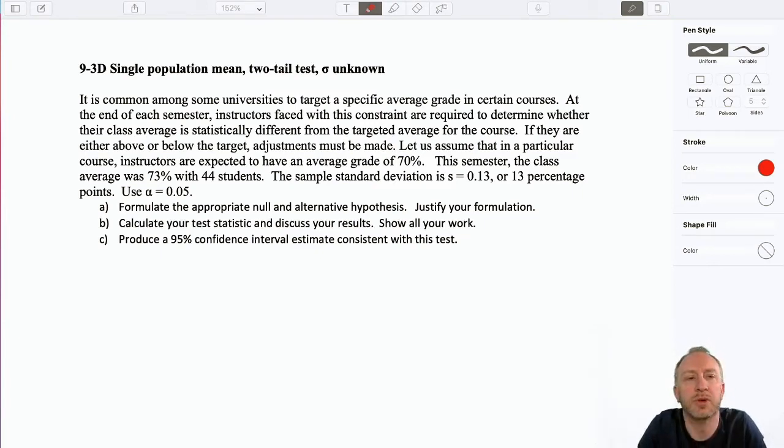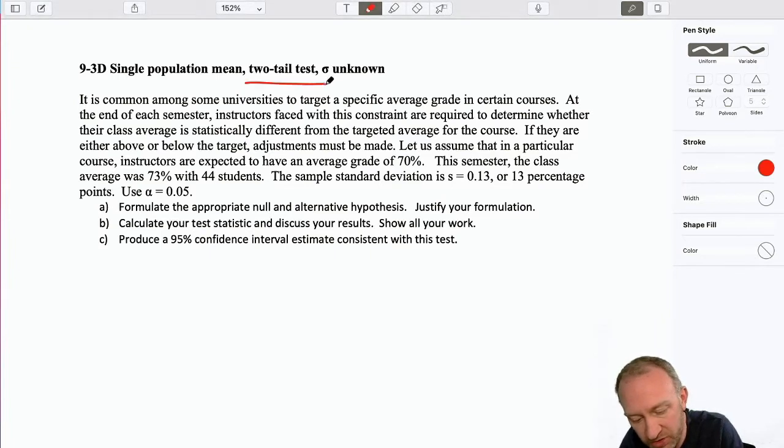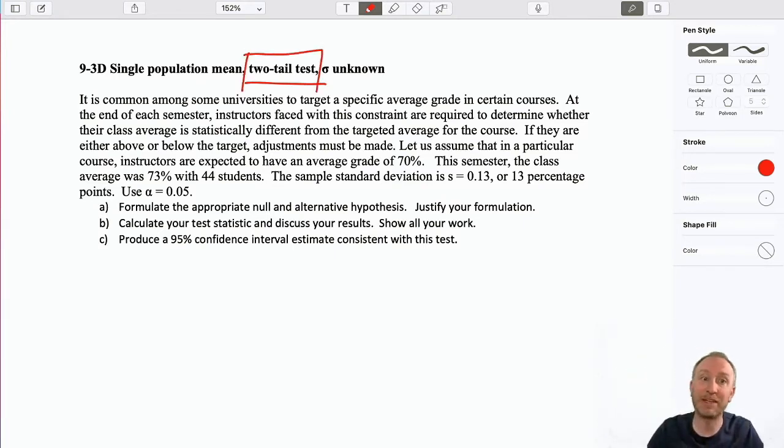Hello everybody and welcome to what's going to be our last example of a t-test on a single population mean. So in this one now we have a two-tail test, and once more we'll make sure that we can see that when we read the problem, so that we understand what it is, because generally speaking that information is not going to be there if you're doing these types of problems on an exam or something. So we'll make sure that just reading this problem, we'll know what kind of test we're doing.